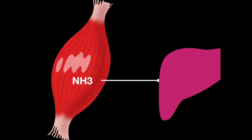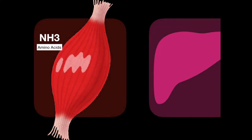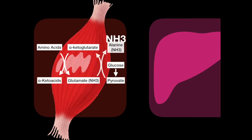The urea cycle only takes place in the liver, so the nitrogen byproduct formed in the muscles needs a route to get to the liver. It is done by being transported as alanine. The nitrogen from amino acids is put on alpha-ketoglutarate to form glutamate, and glutamate and pyruvate from glycolysis combine to form alanine.